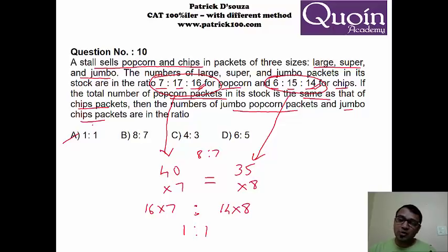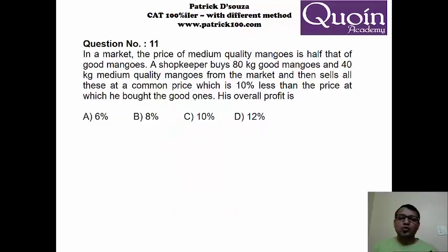Which means my jumbo popcorn packets will be 16 into 7, but my jumbo chips packet will be 14 into 8. And if you realize, they will be equal. 1 is to 1. So automatically A option. No major equations required. No formulas is required. Just look at the sum, understand the sum and solve.